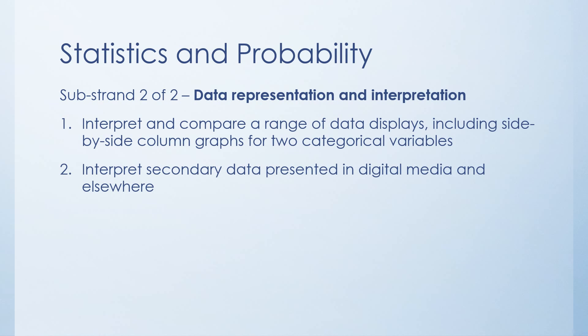And the last thing that we'll look at the final substrand of the final strand is data representation and interpretation. So the first content descriptor is interpreting and comparing data displays, including having column graphs side by side with two categorical variables. So it's really about trying to properly read graphs and getting the information that you can from them. This is obviously really important as statistics will ramp up further in high school, where you're really going to have to be able to understand things that you're looking at, even if they don't have a lot of words to be able to talk you through it. And lastly is interpreting secondary data. So it's about finding secondary data and being able to understand what it means. And this will be data that can be found in digital media and in other locations.